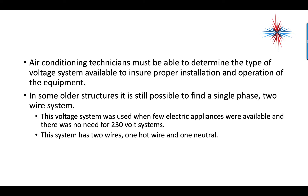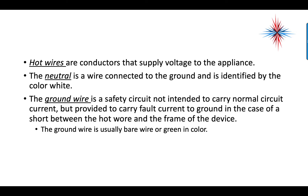Air conditioning technicians must be able to determine the voltage system available to ensure proper installation and operation of equipment. In some older structures, it is still possible to find single-phase two-wire systems. This voltage system was used when few electrical appliances were available and there was no need for 230-volt systems. The system has two wires: one hot wire and one neutral. Hot wires are conductors that supply voltage to the appliance. The neutral wire is connected to the ground, identified by a white color, and carries fault current to ground in case of a short between the hot wire and the frame of a device.